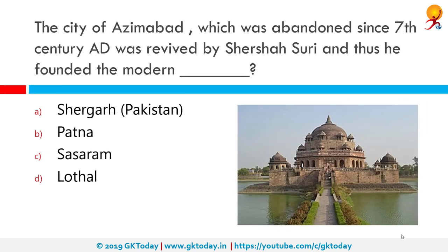The city of Azimabad, which had been abandoned since the 7th century AD, was revived by Sher Shah Suri, who thus founded modern-day Patna. The city of Patna was known as Azimabad during the 18th century prior to the British Raj. In ancient times it was known as Pataliputra. Sher Shah Suri had removed his capital from Bihar Sharif to Pataliputra, and not long after Sher Shah Suri's death in 1545, Patna and Bihar fell to the Mughals.